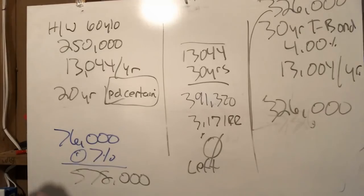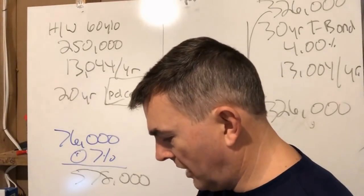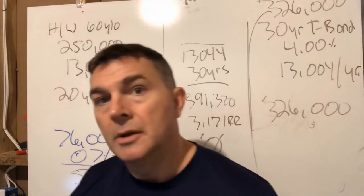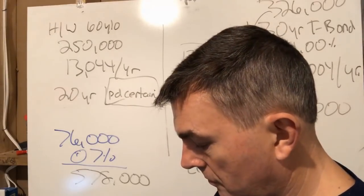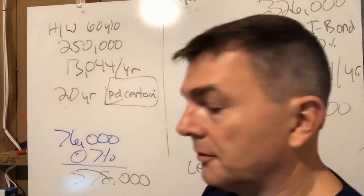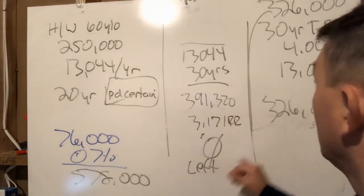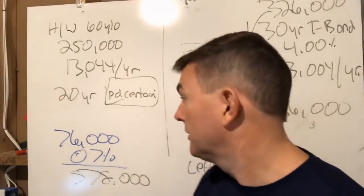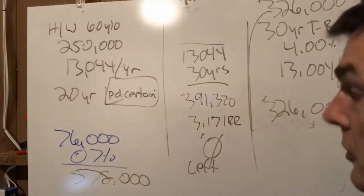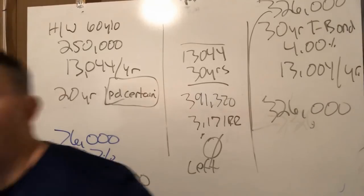That $76,000 doubles every 10 years at 7%. After 30 years it's worth $578,000. If you got 8% on that money, it's worth $764,000. So the annuity zeros out. The treasury bond gives you $326,000. But the $76,000 invested at 7% is now worth $578,000 — or $764,000 at 8%. That's the difference the annuity makes by freeing up capital to use toward other investments that can grow better for you, theoretically.